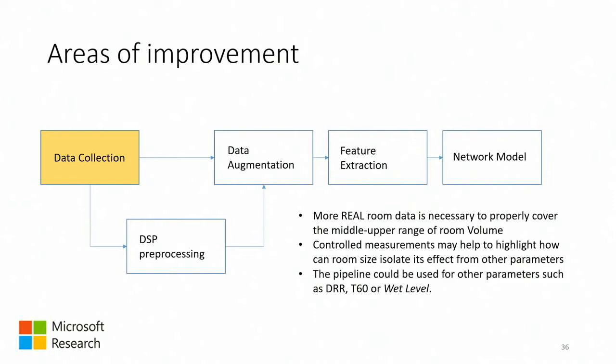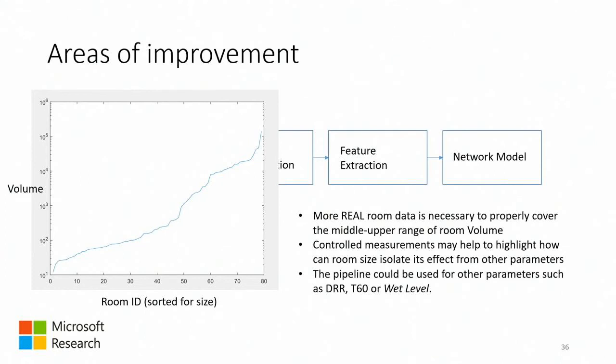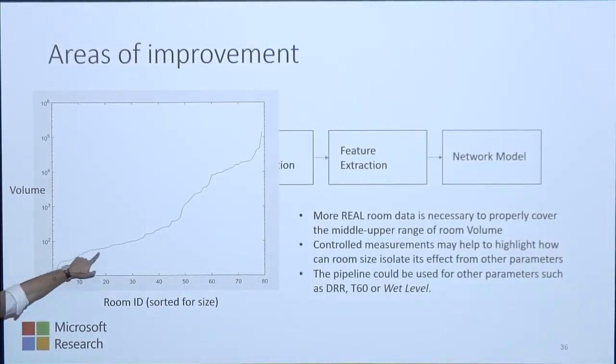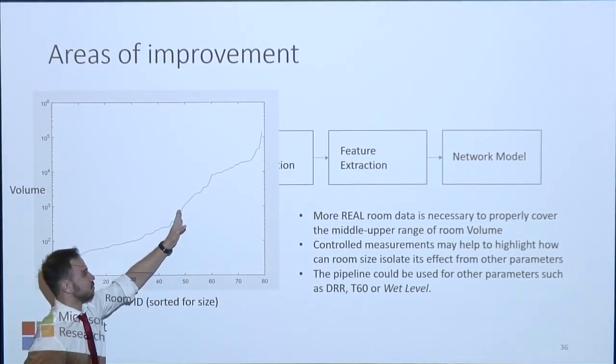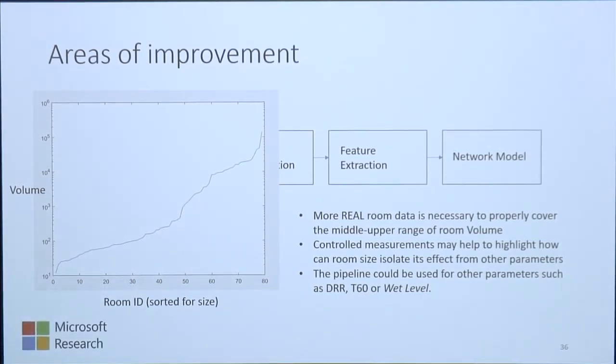Some depth sensors in devices can already give some kind of local mesh of what's around you — this is all food for thought for more precise and tailored solutions. Data collection can be improved by having more data. There was that gap in the distribution shown earlier. Perhaps if we covered the distribution more evenly, results could get better. This pipeline could also be reused potentially for other parameters such as the DRR, T60 in frequency bands, or the wet level discussed in previous meetings.